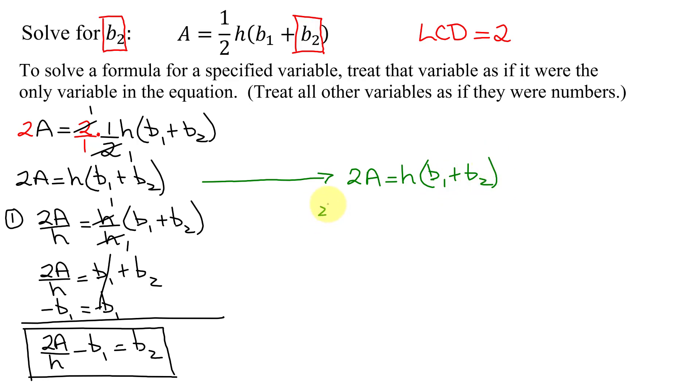So now our second method, we're going to distribute the h into the parentheses. So I get 2A equals hb1 plus hb2.